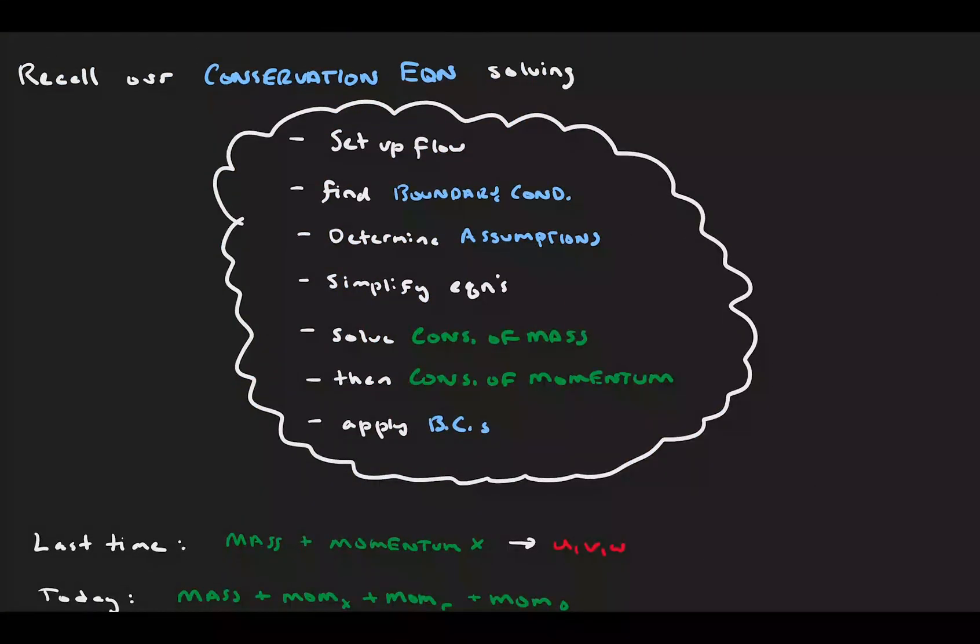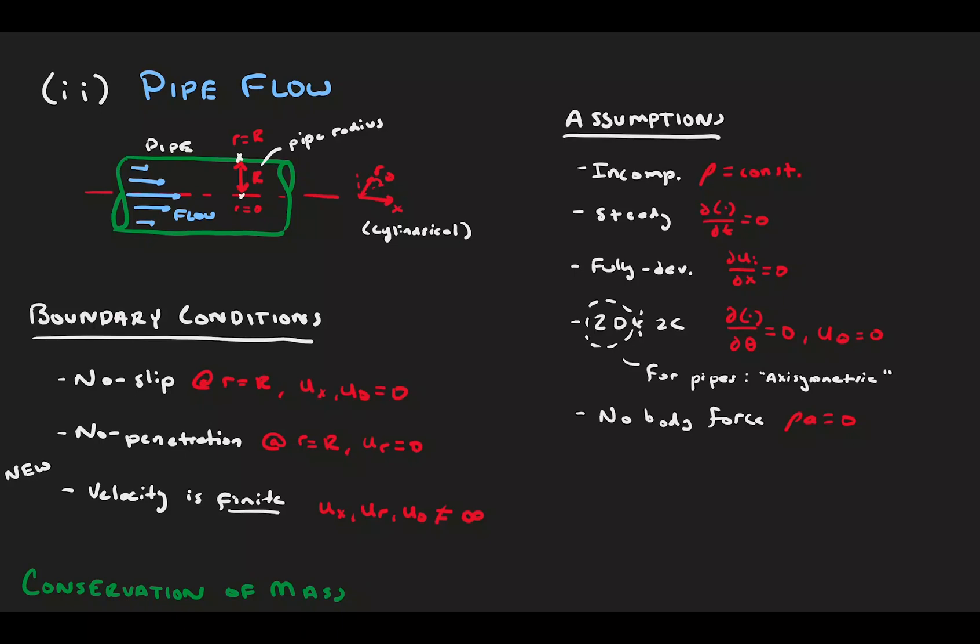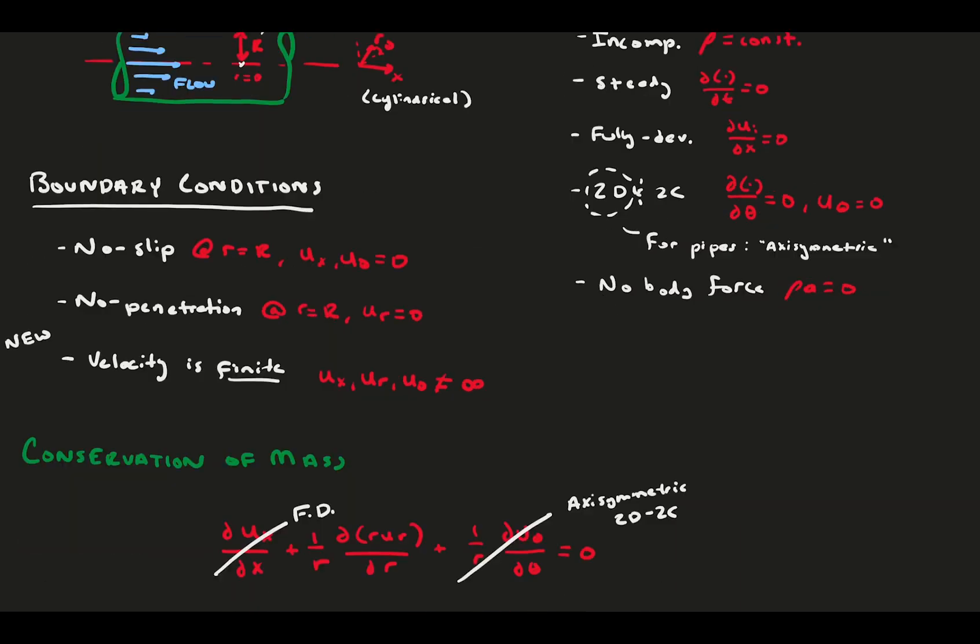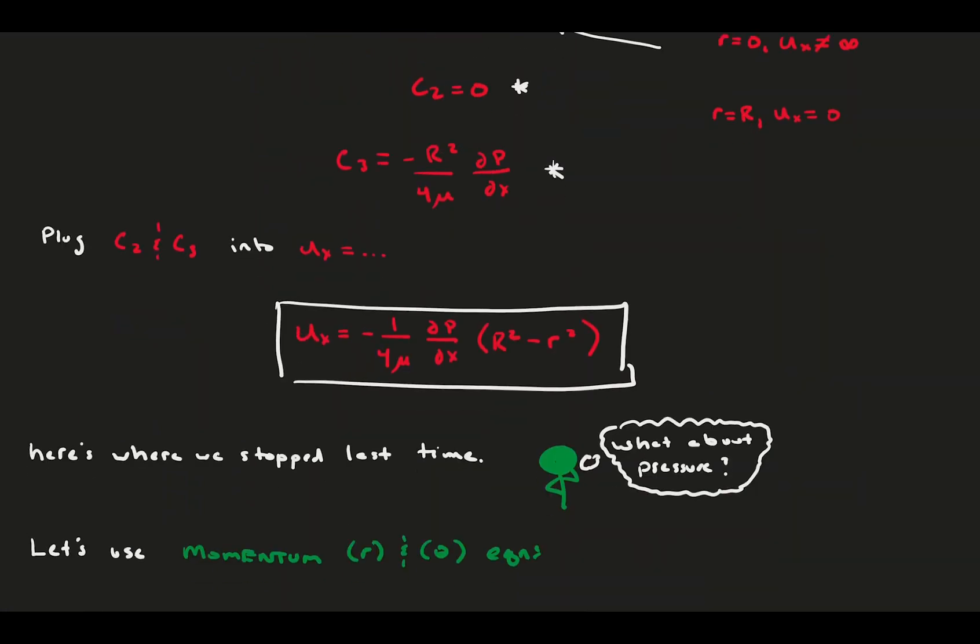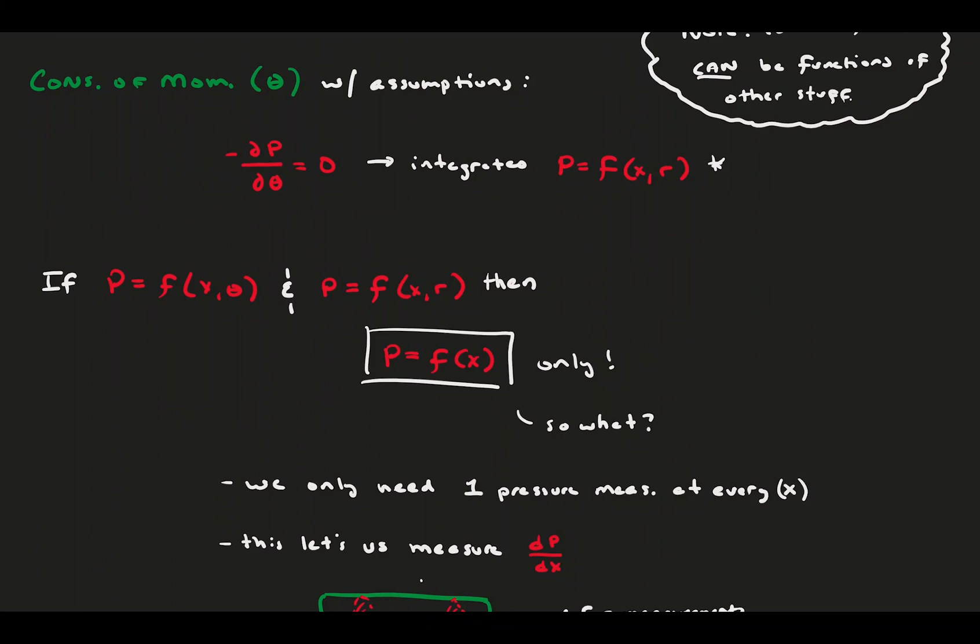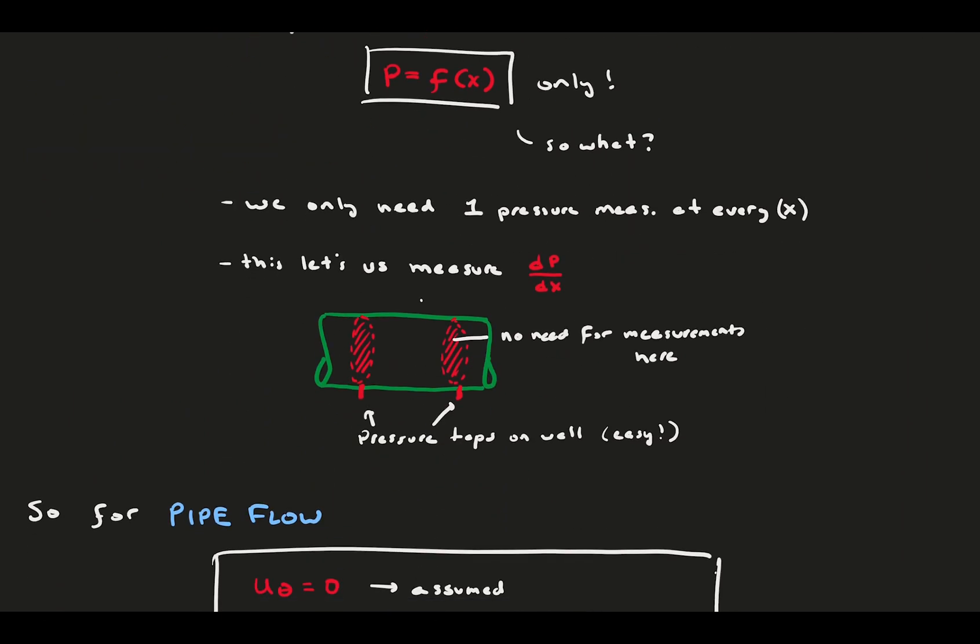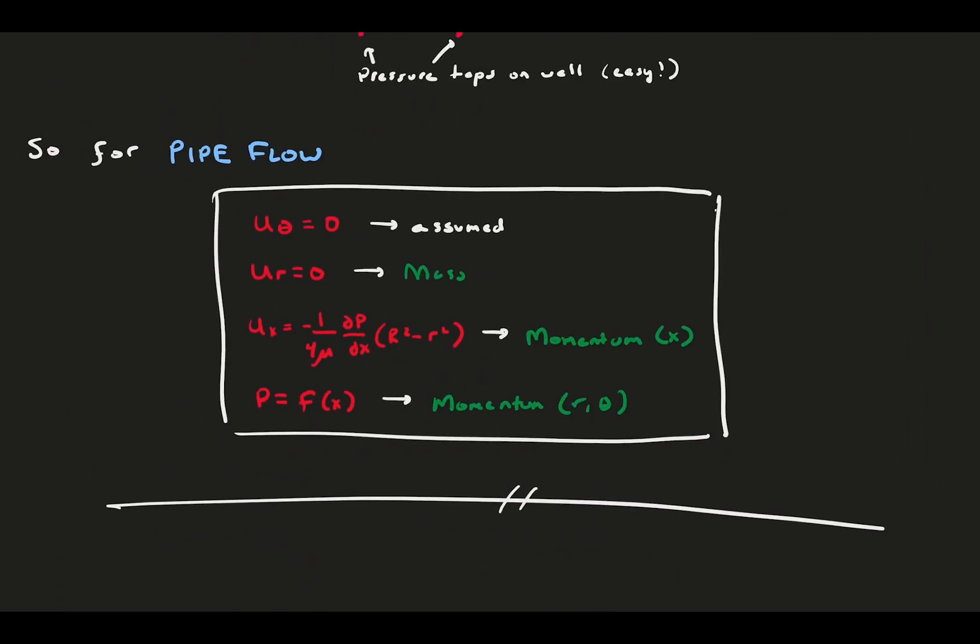We started by recalling our step-by-step process for solving the conservation equations to the best of our ability. We applied these steps to pipe flow, an axisymmetric and closed flow using cylindrical coordinates. With our assumptions and boundary conditions, conservation of mass and conservation of momentum got us detailed expressions for the velocity field. And, moving on to the conservation of momentum in the other two directions, we learned about the pressure, which has practical measurement implications. It should be noted that these velocity functions only apply to laminar flow. As flow becomes turbulent, it gets a lot messier, which we'll see in later videos. I hope you enjoyed the video, and thanks for watching. Bye.